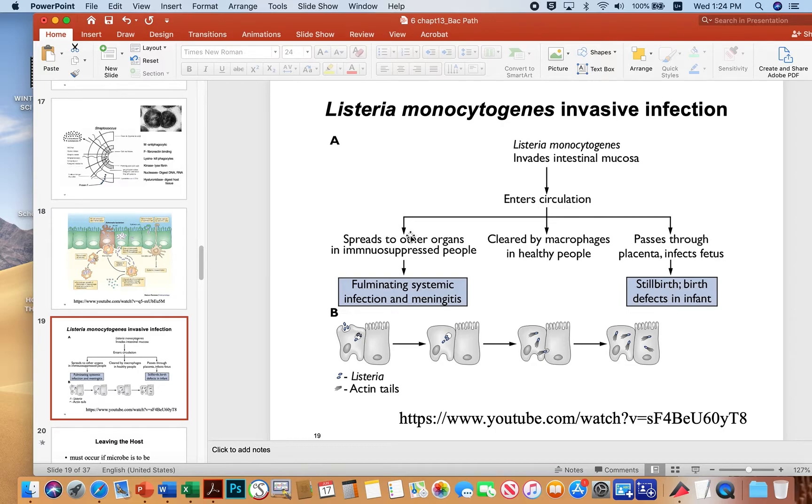In people with immunosuppression or the elderly, for example, they can spread basically and cause a fulminating systemic infection such as meningitis where they punch into the central nervous system and infect the meninges.